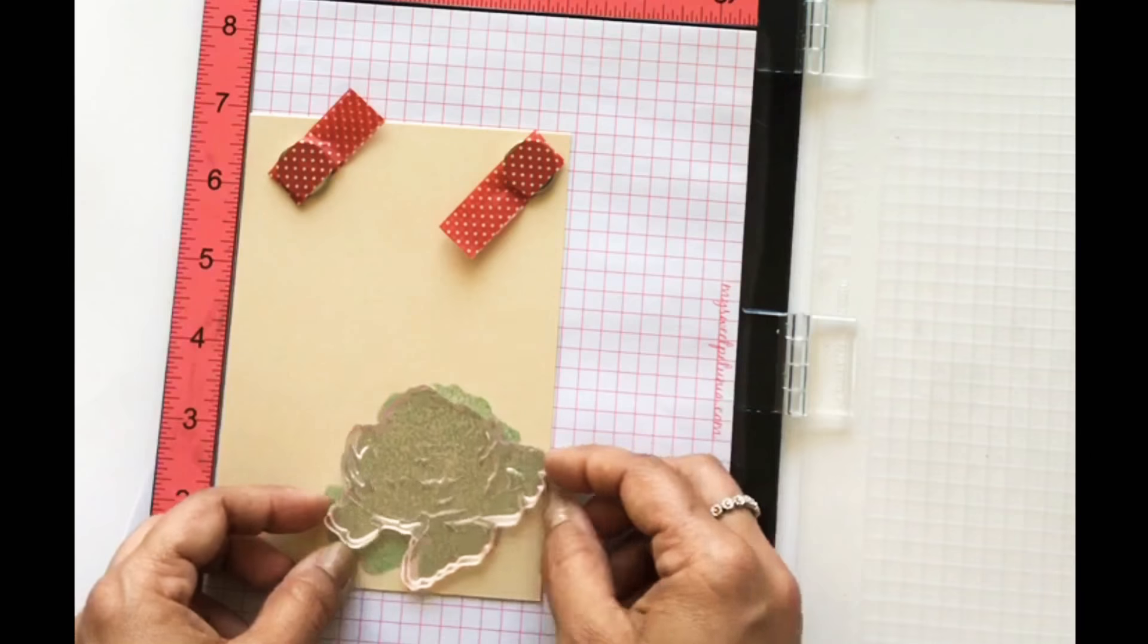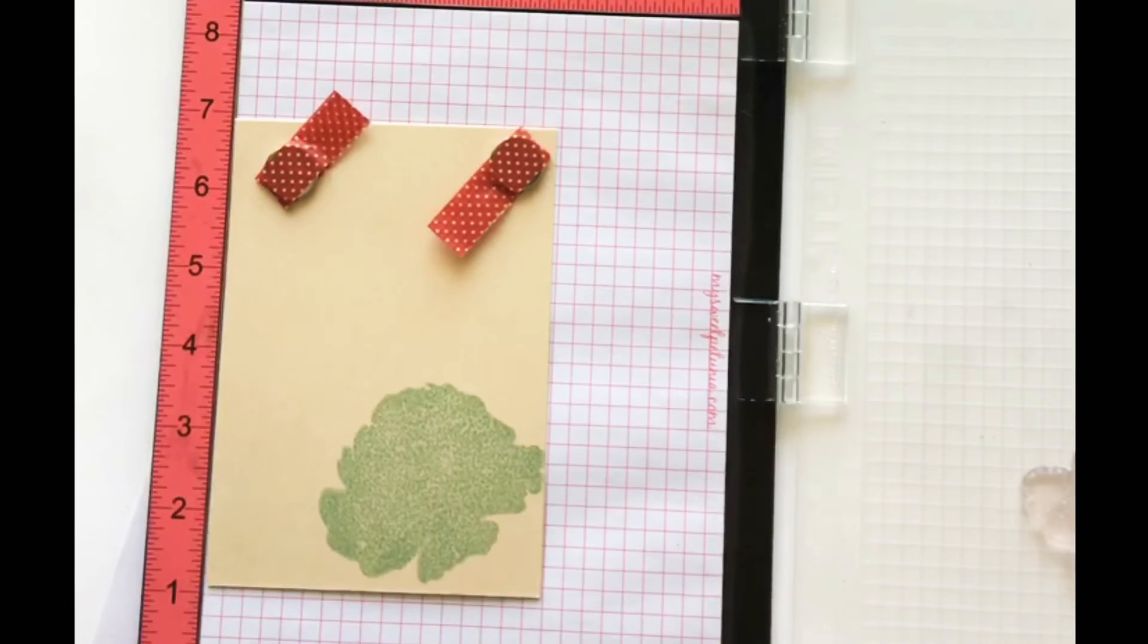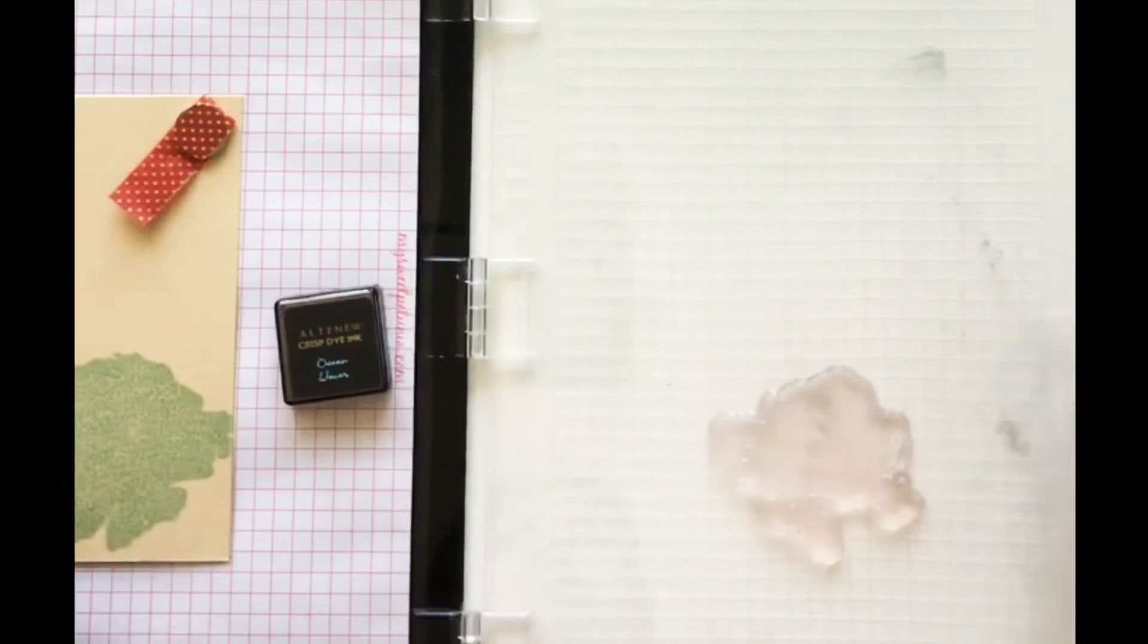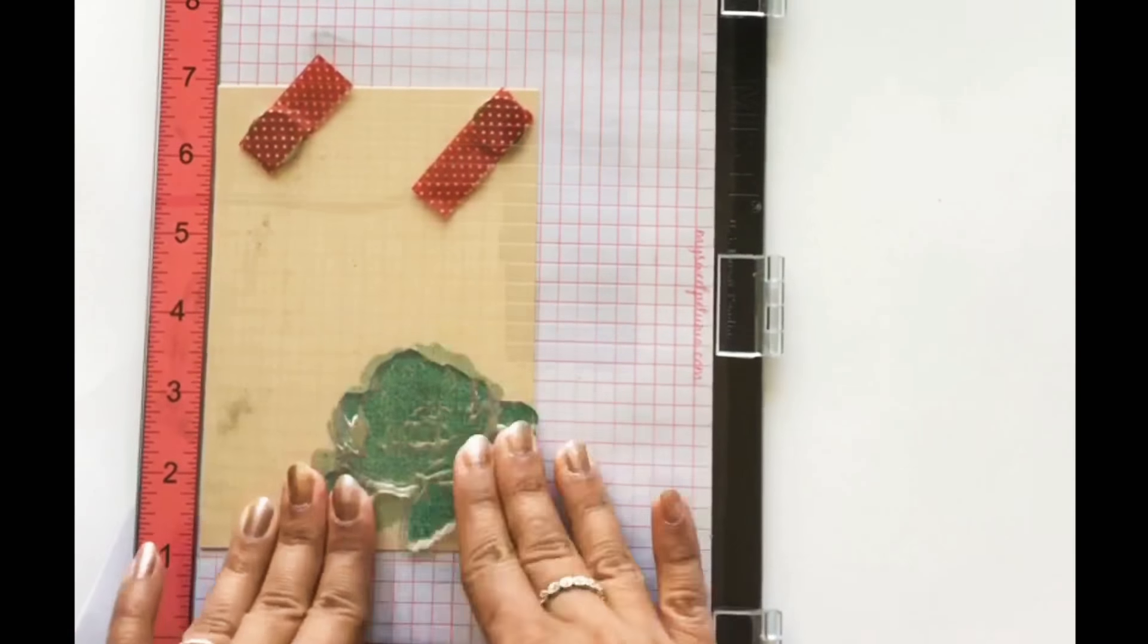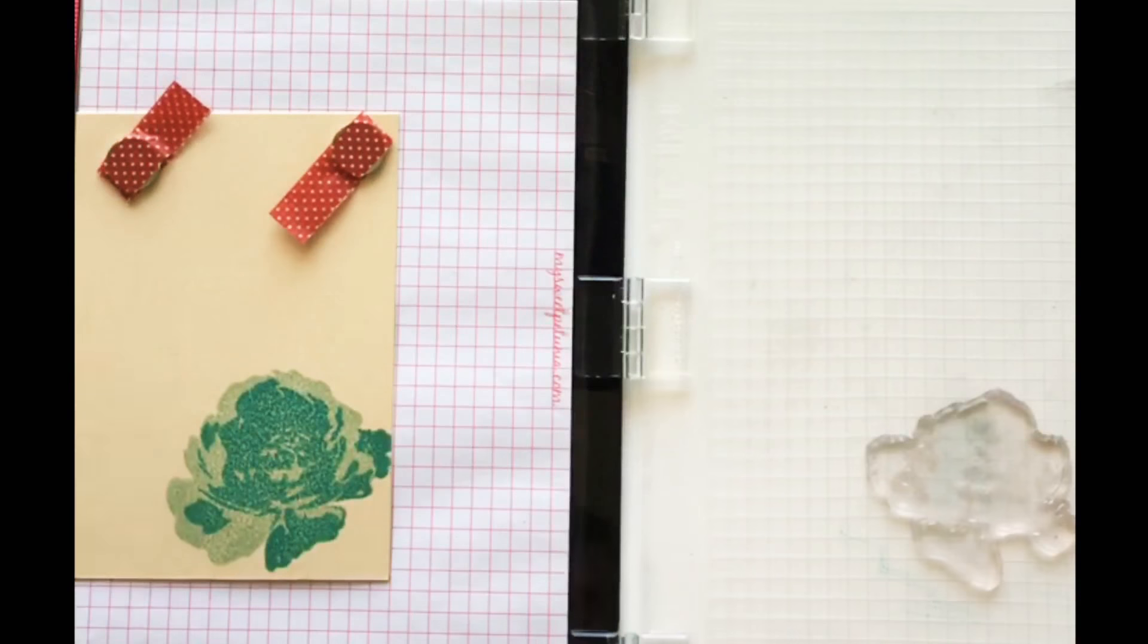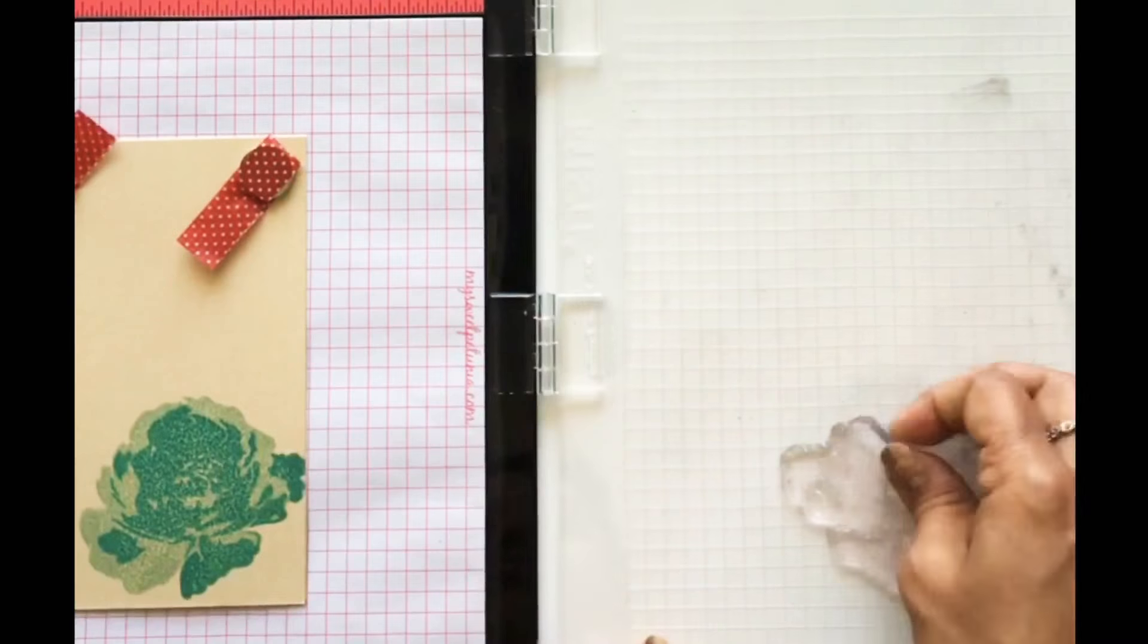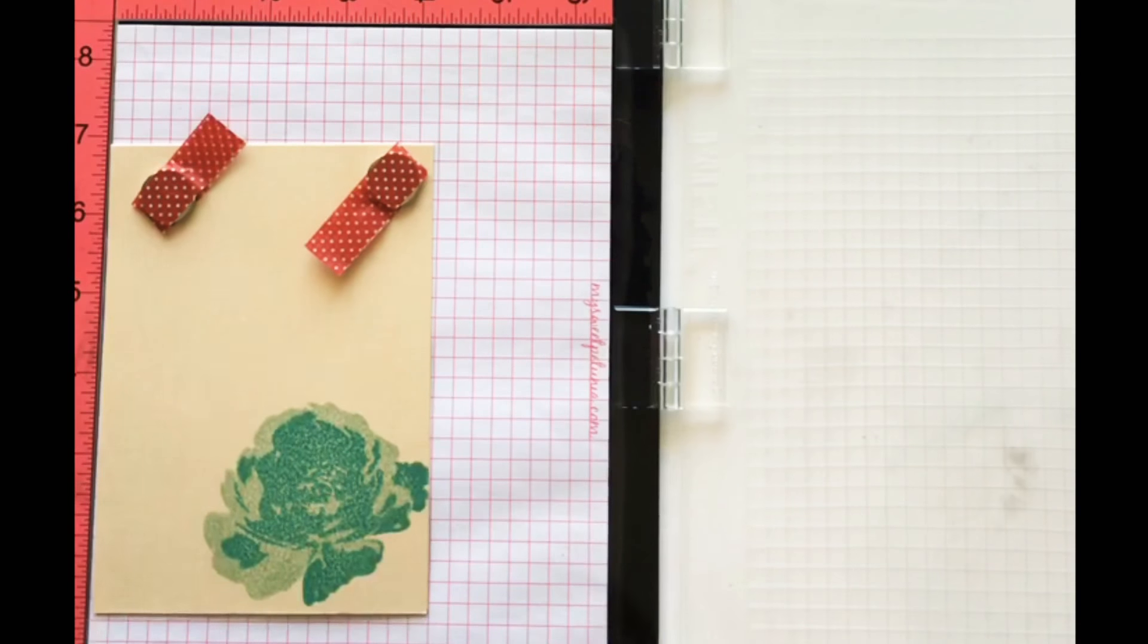I chose a colored cardstock for my card base so I'm doing all the stamping twice for better shades. I'm cleaning my stamps using Lawn Fawn stamp chamois tool. You can find all the supplies link in the description box.